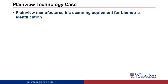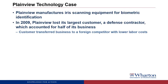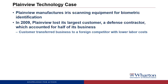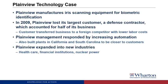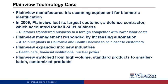Plainview Technology manufactures iris scanning equipment for biometric identification. In 2009, Plainview lost its largest customer, a defense contractor, which accounted for half of its business. The customer transferred its business to a foreign competitor with lower labor costs. Plainview Management responded by increasing automation. The company also built plants in California and South Carolina to be closer to its customers. Plainview expanded into serving customers in new industries such as healthcare, financial institutions, and nuclear power. Plainview switched from high-volume standard products to smaller batch customized products.